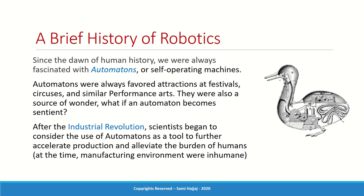Since the dawn of human history, we were always fascinated with automatons. Before the 19th century, the word automaton described what we call a robot today — any kind of machine that operates on its own. These automatons were very popular attractions in festivals, circuses, and live performances. People were fascinated to see these machines run by themselves and do magical things, like move a hand or open a mouth like a duck.